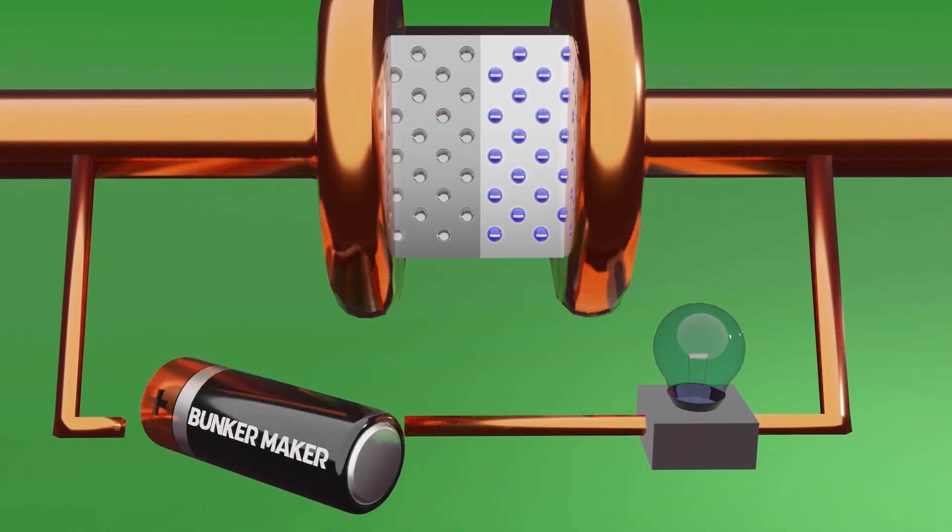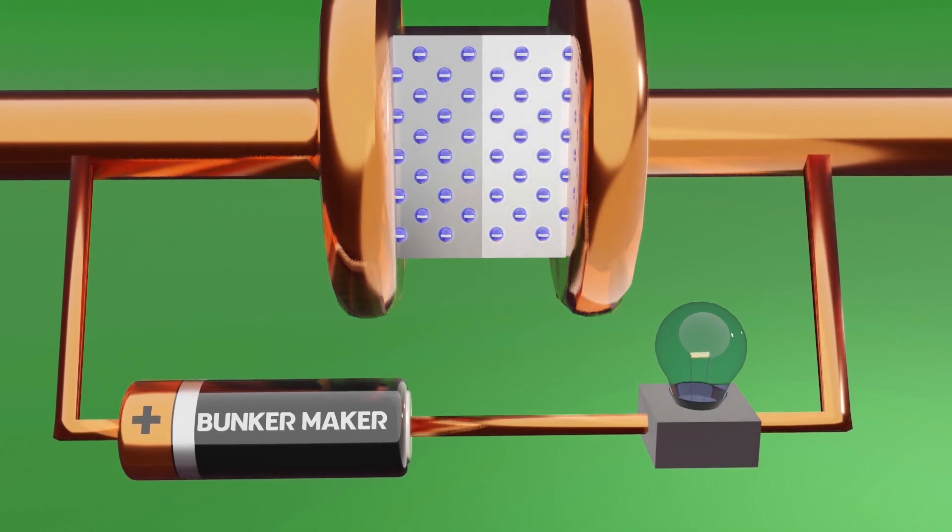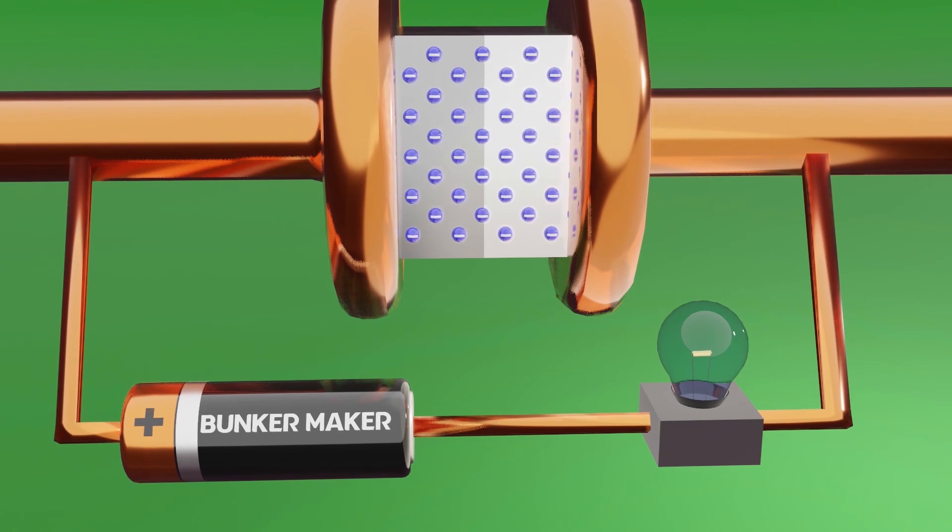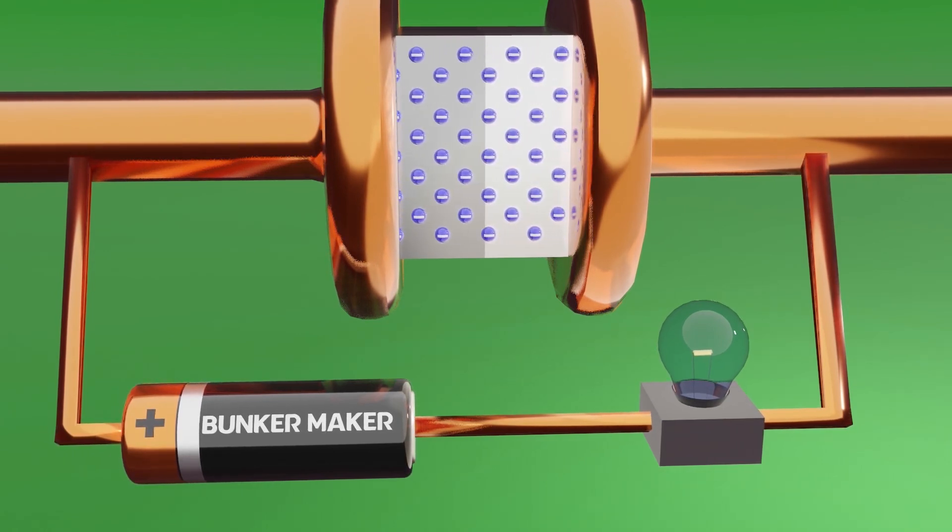Now, if we reverse the connections, the electrons are going to try to move in the opposite direction, and they will pass to the p-type semiconductor, crossing it until reaching the conductor cable at the other side.